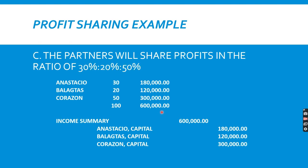Letter C: percentages of 30%, 20%, 50%. Total is already 100%. Multiply each percentage by 600,000 directly — giving each partner's profit share — which flows into their respective capital balances.